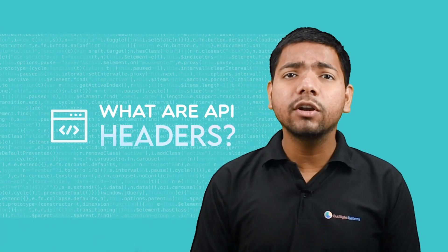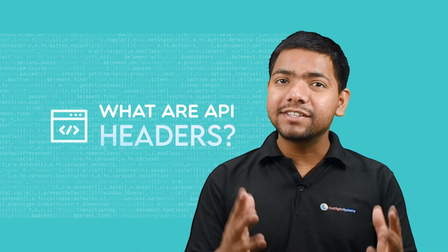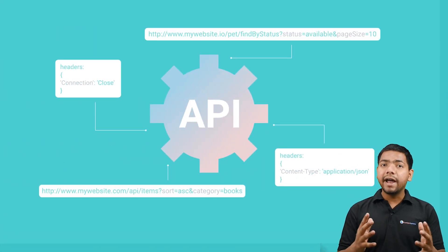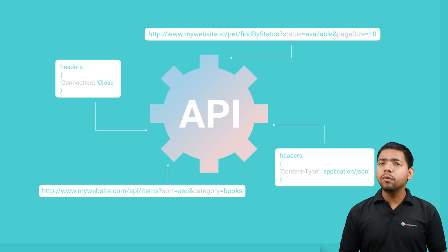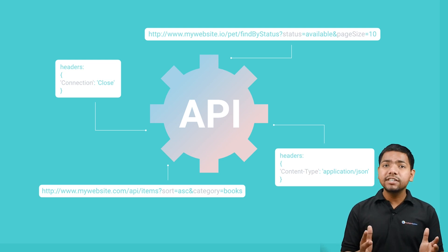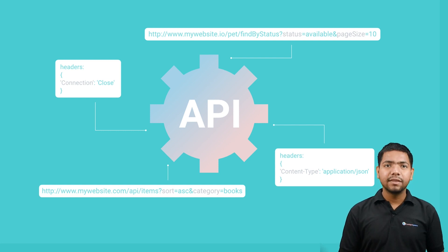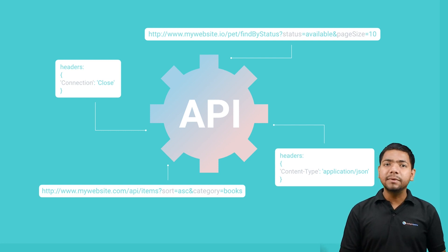Let's talk about the second most important component, which is the header. Headers are just like envelopes that carry important information about a request or response. In technical terms, a header refers to additional information included in the HTTP request or response that provides detail about the request or response itself. Headers contain metadata about the message being transmitted.